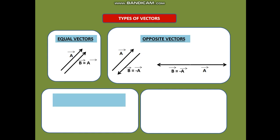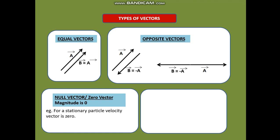We can also have a null vector or zero vector. As the name suggests, the magnitude is zero. For example, for a stationary particle, the velocity vector is zero. Also, if an object is moving with uniform velocity, then its acceleration vector is zero.